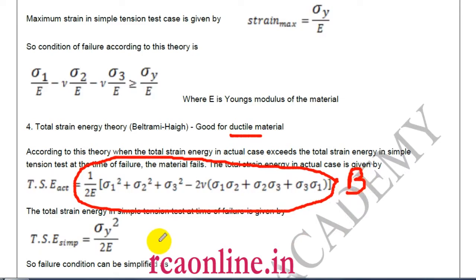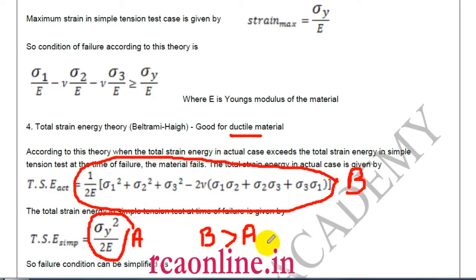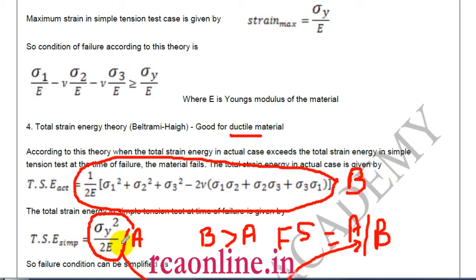The strain energy in the simple test is sigma y² / (2E). Failure takes place when the complex loading strain energy exceeds the simple test strain energy. The factor of safety is the simple test value divided by the complex loading value. This theory is given by Haigh and is good for ductile material.